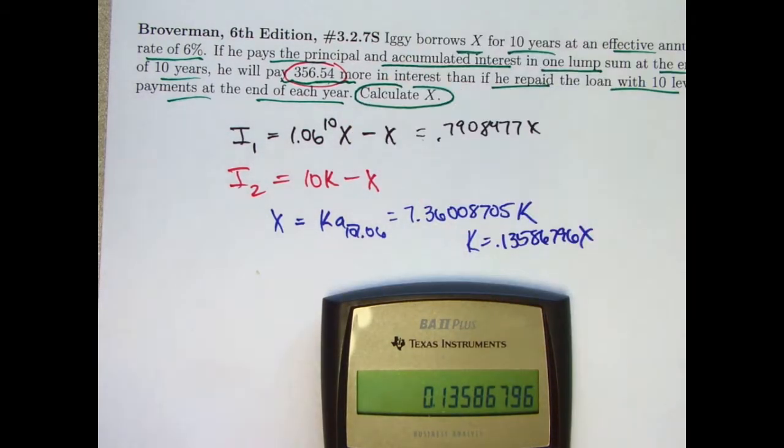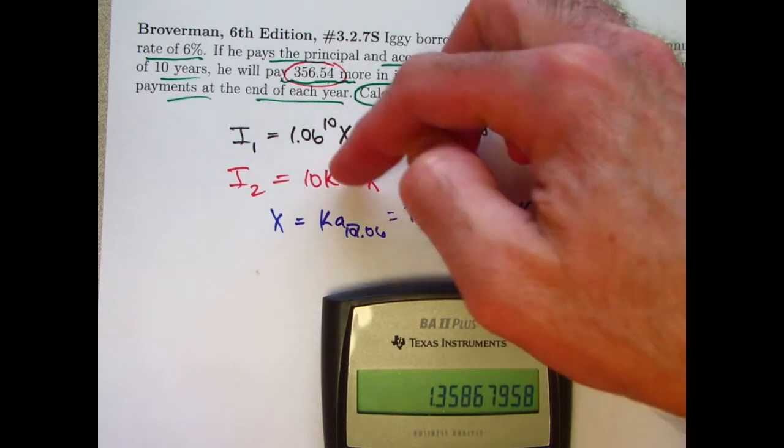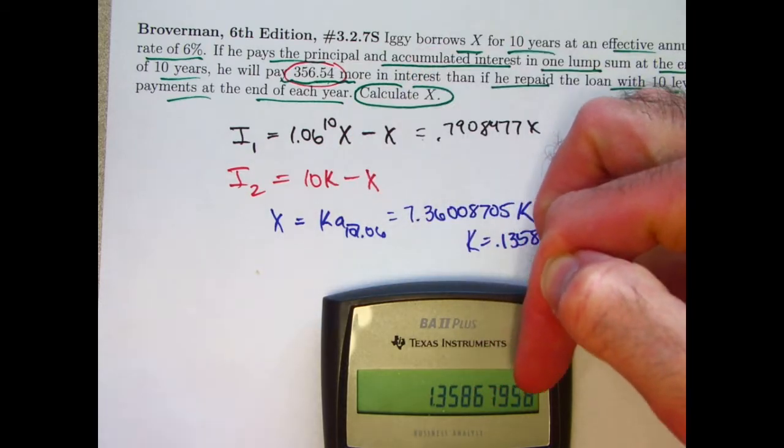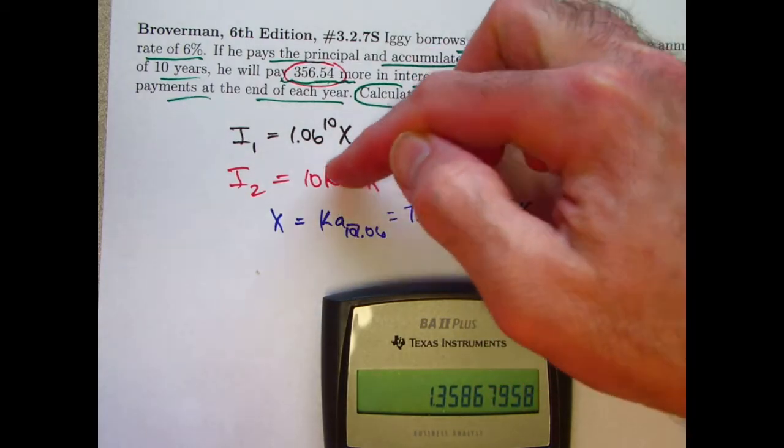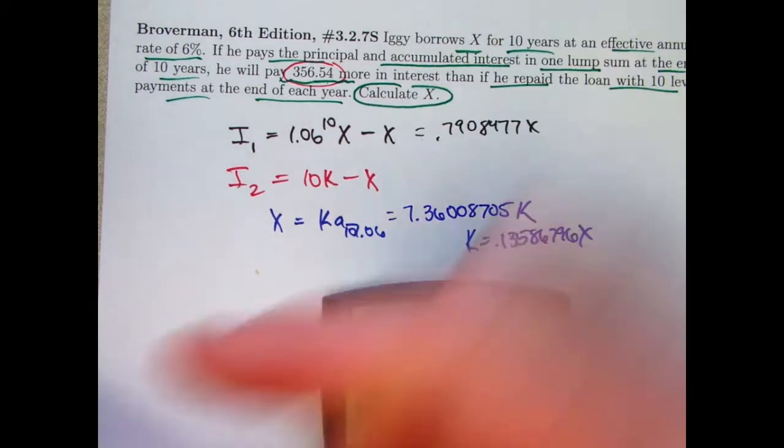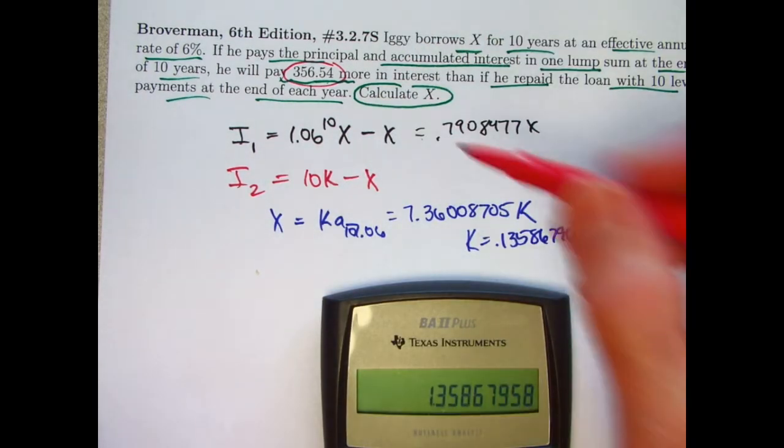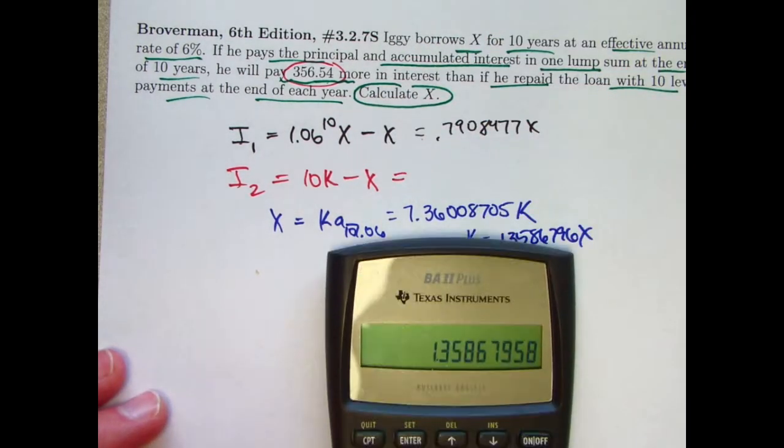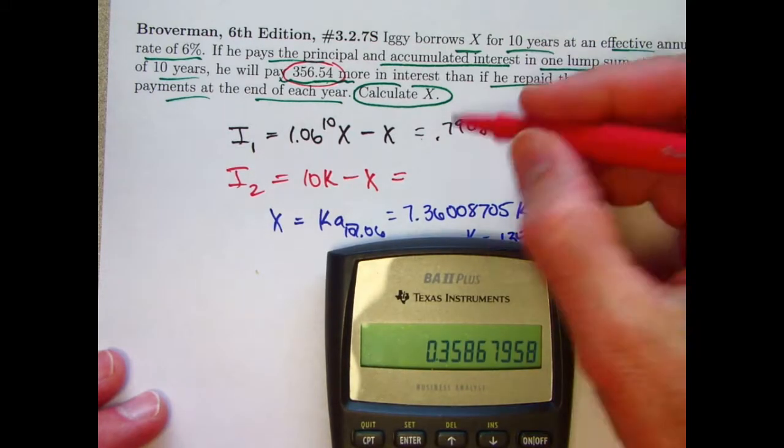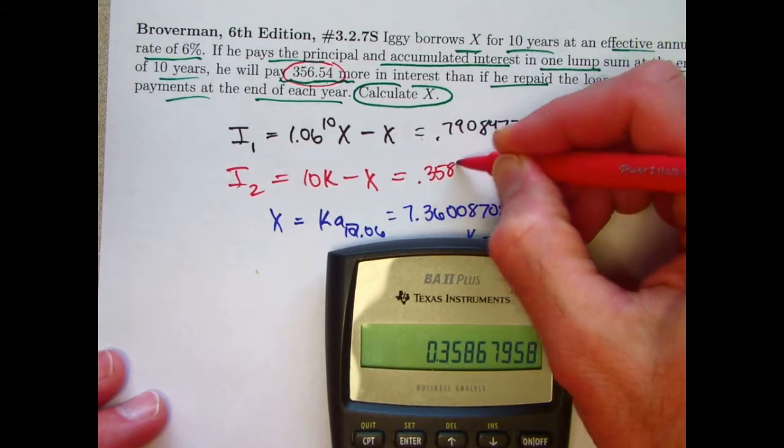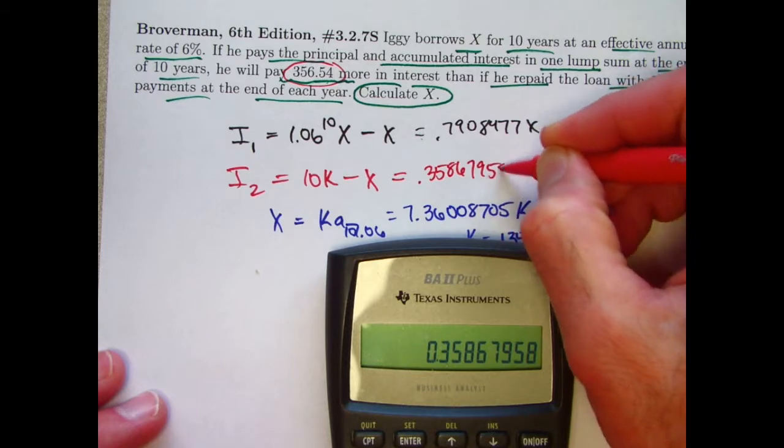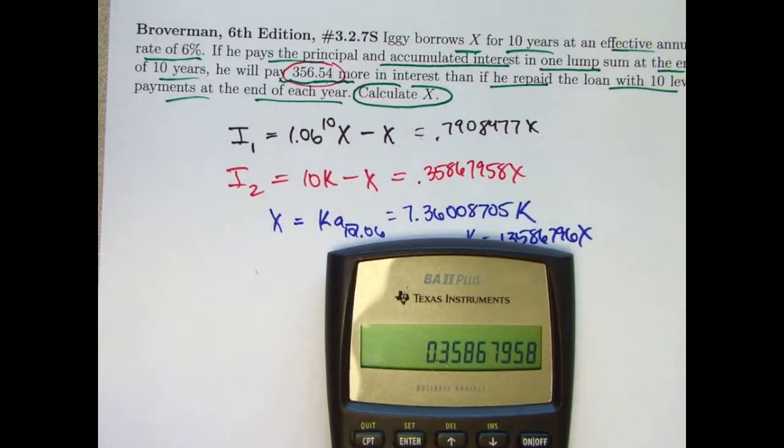I need 10K. So, multiply this by 10. And then that would go in here. 1.35867958 times X would go there. Minus X. This thing here is going to simplify. Subtract 1 from this. 0.35867958 times X. Don't forget about the 356.54.